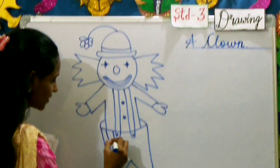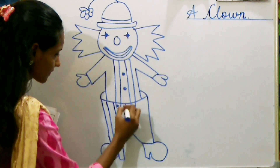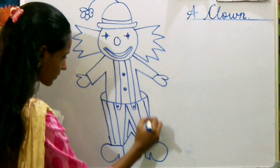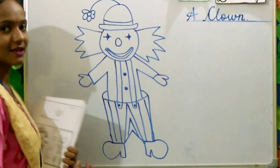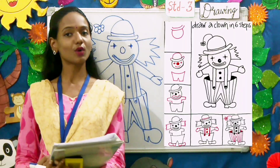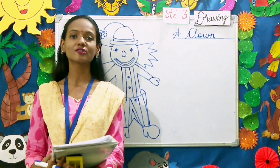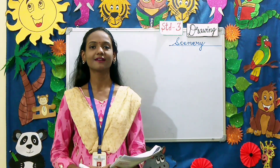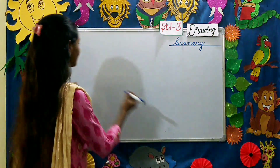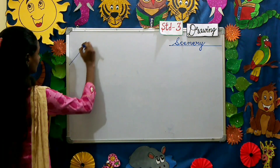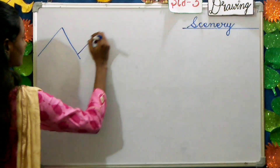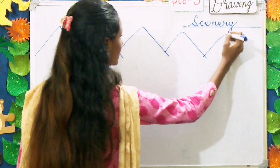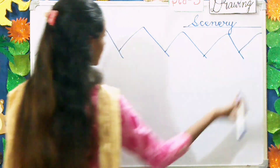And the design of the pants — there you go children, your clown is ready. This is the worksheet that will be uploaded on the school website. Our last topic is a scenery. Come children, let's draw a scenery.